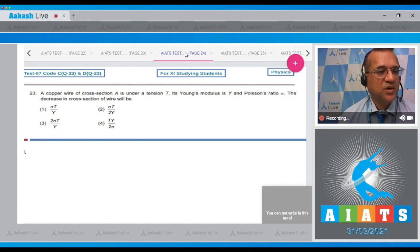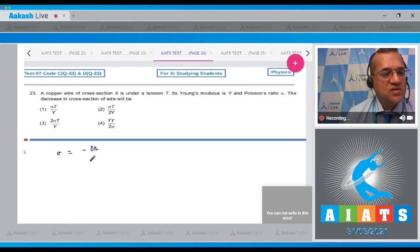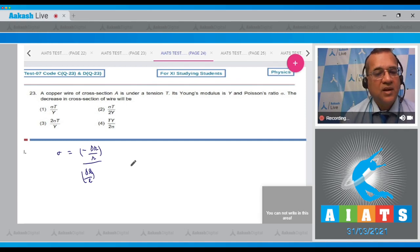Let's go to question number 23. It says that a copper wire of cross section area A is under a tension T. Its Young's modulus is Y and Poisson ratio is sigma. The decrease in cross section of the wire value. You know that the Poisson ratio is equal to the lateral strain divided by the longitudinal strain. Therefore, the magnitude of the lateral strain is equal to sigma into delta L by L.